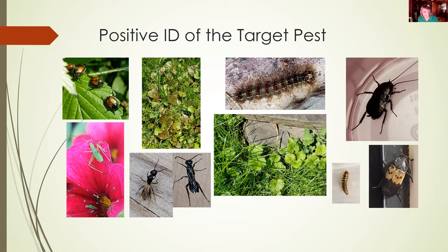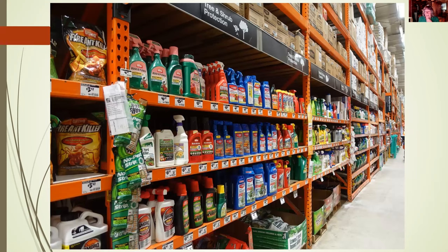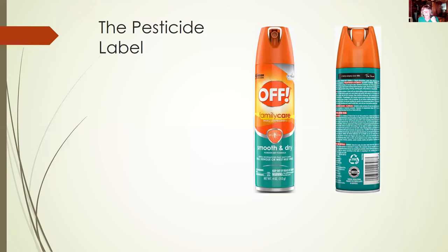Once you've positively identified the pest and determined that using a pesticide fits within your overall integrated pest management plan, you head to your local hardware store and your eyes just glaze over. There are aisles and shelves of all these different brand names, container types and sizes, formulations — and sadly, the nice people in the orange vest usually aren't much help. So how do you go about deciding which product is the one you should use? Well, a lot goes into that decision, but fortunately, the best piece of information to help you is right there in front of you, and that's the pesticide label.